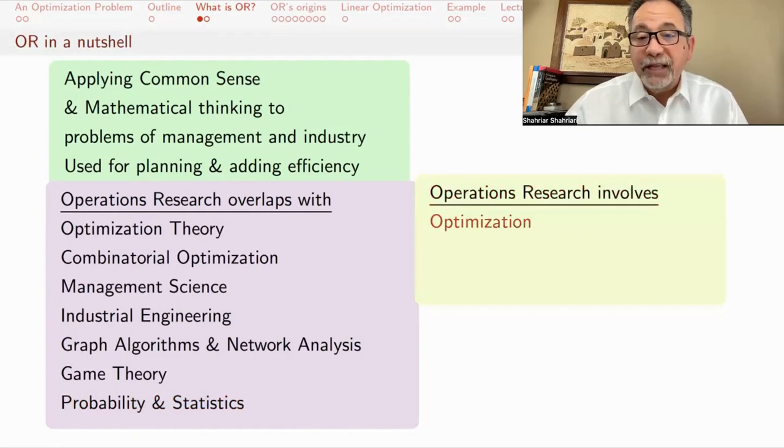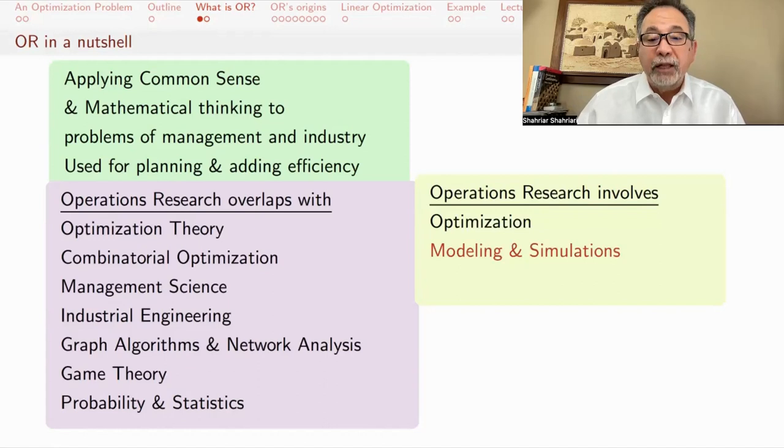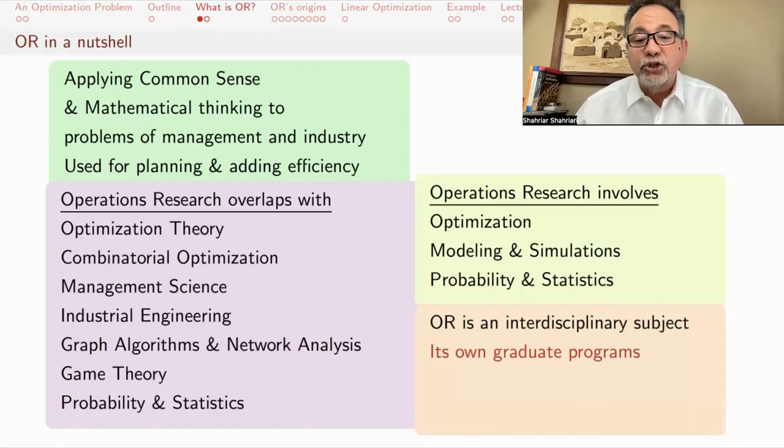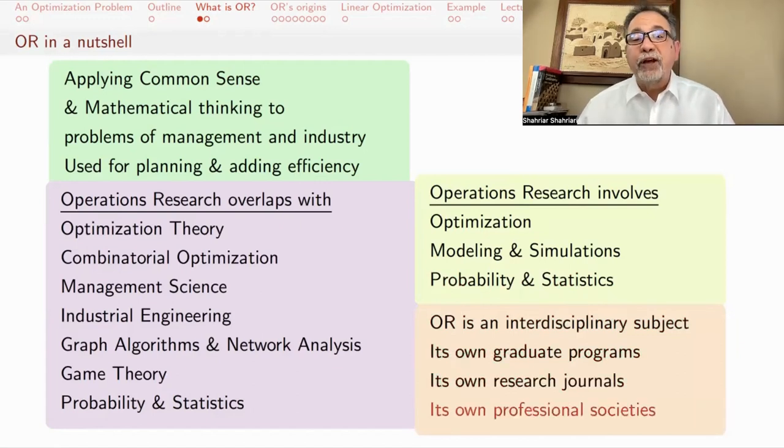Operations research involves optimization, trying to find the best way to do something. It involves modeling and simulations. It involves taking real life situations, making assumptions, simplifying the problem and creating a model, then doing simulations to see how your model works and then going back and fixing your model and so forth. It involves probability and statistics in estimating the various parameters and also afterwards to check to see how well it's doing. Also, some of the models are stochastic models that involve probability right from the get-go. OR is an interdisciplinary subject. It has its own graduate programs, its own research journals and its own professional societies.